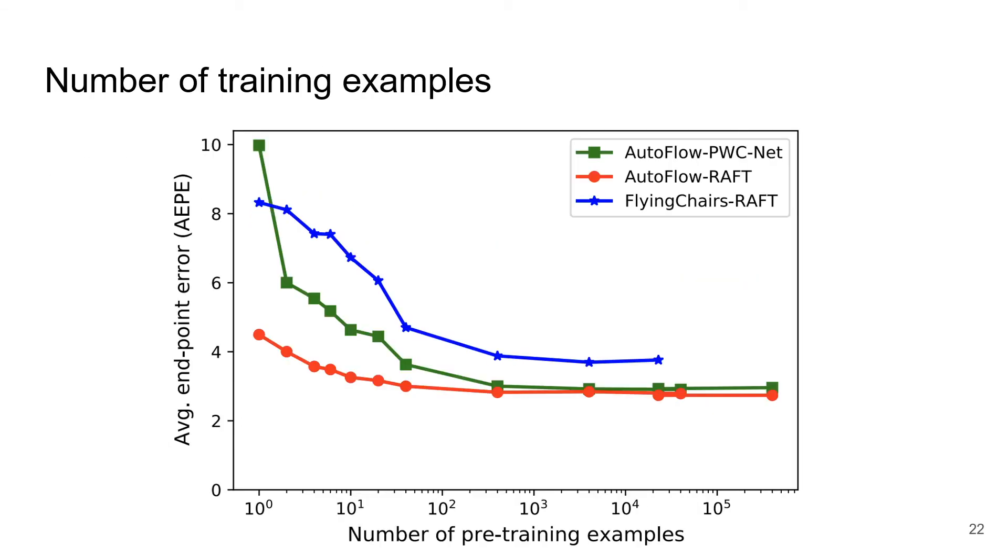One surprising observation is that AutoFlow performs well even when generating as few as 4 training examples. In fact, a network trained on 4 AutoFlow examples with augmentation performs as well as a network trained on more than 22,000 flying chair images with augmentation.